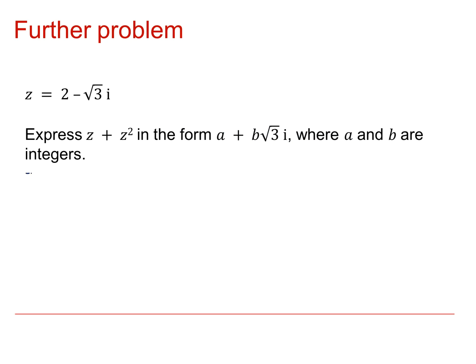To make our working clear, let's work out z squared separately first. That's 2 minus root 3i, multiplied by 2 minus root 3i. Notice how I'm making my 2s nice and loopy to make sure that they look different from my zs.